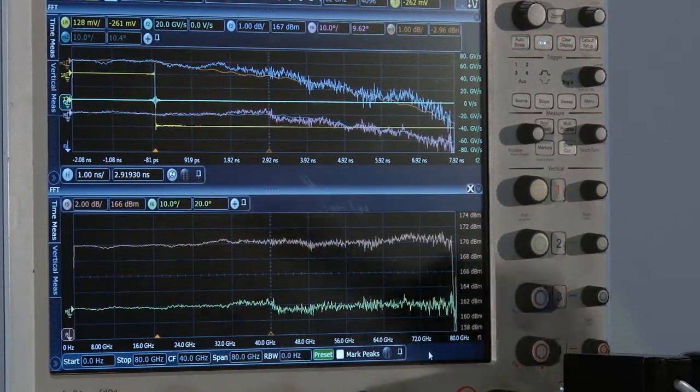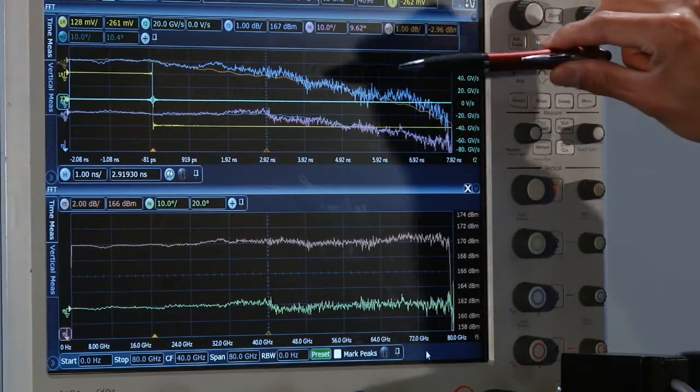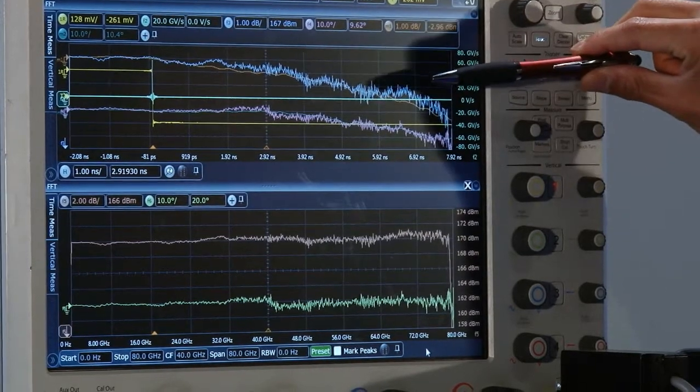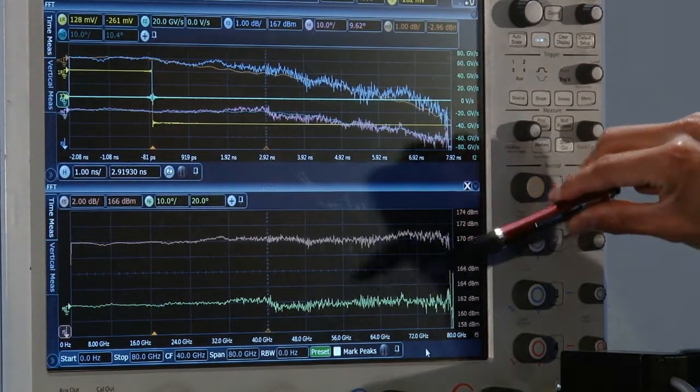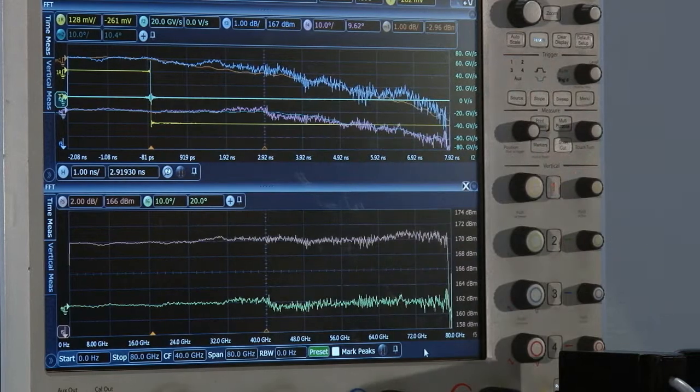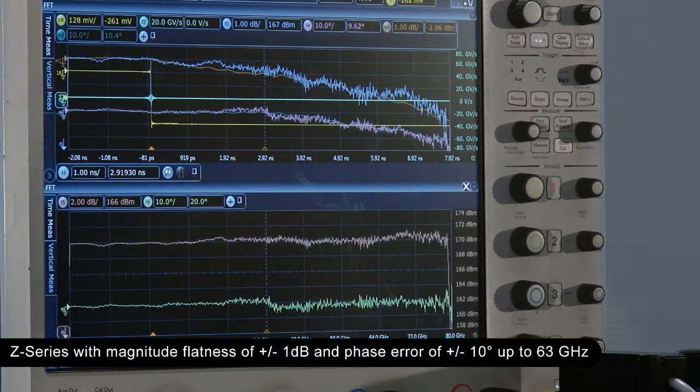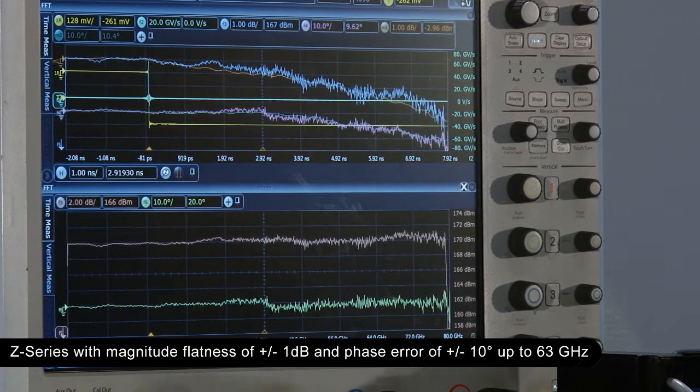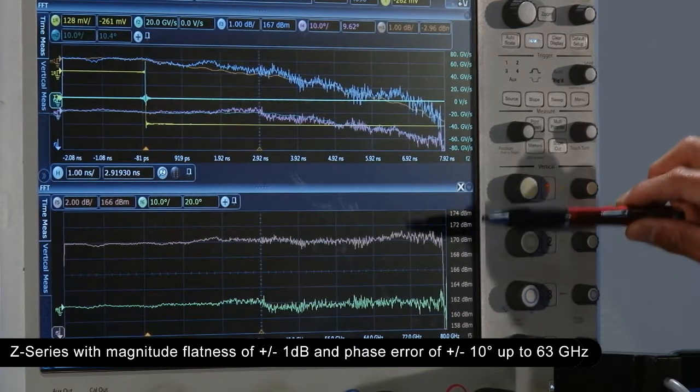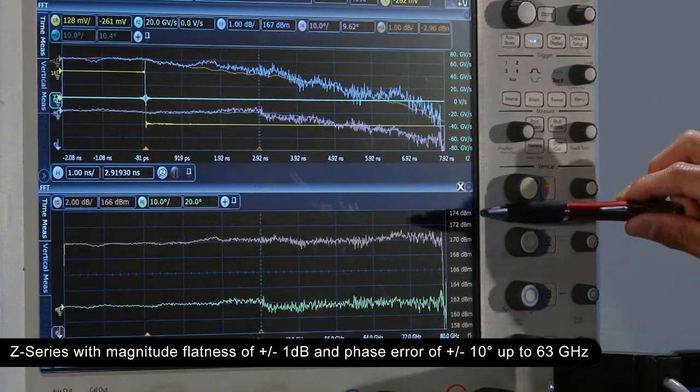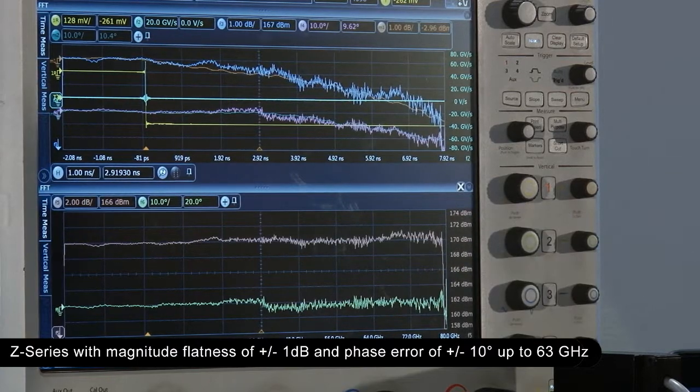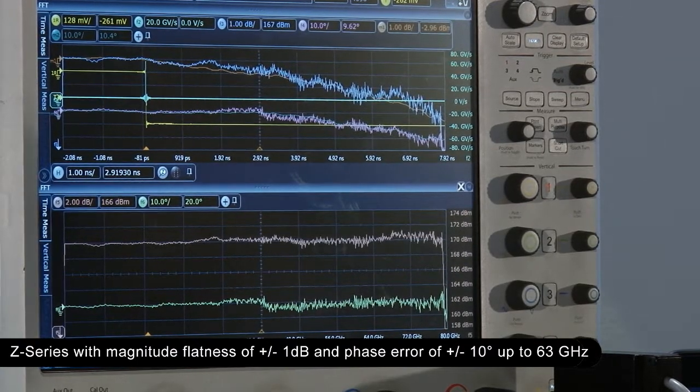So when we subtract and corrected the phase and the magnitude of the scope, this is the plot that we get. And you can see how flat the magnitude and phase of the oscilloscope is. So we're talking about a magnitude of plus-minus 1 dB up to 63 GHz, and also a phase error of less than plus-minus 10 degrees of error.